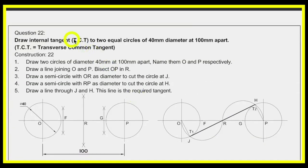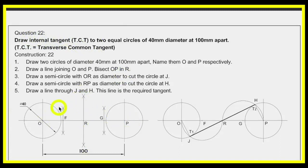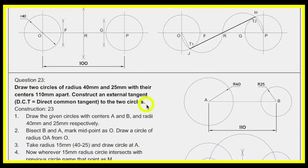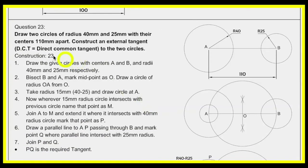For TCT (transverse common tangent / internal tangent) with equal radii: divide line OP into four parts. From F to O draw a semicircle downward; from G to R draw a semicircle upward, then draw the tangent.